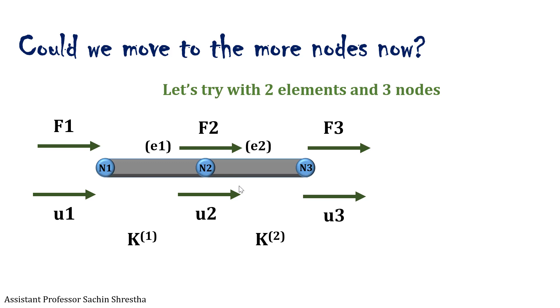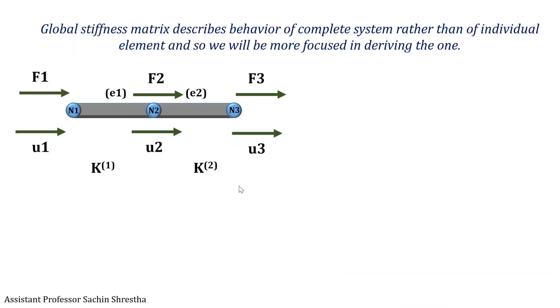The global stiffness matrix basically represents the overall system rather than the individual element. To write the equation, we will use a trick to obtain the equation in a faster manner. For each equation for force at a particular node, for each displacement vector close to the node we will take it as positive, and if away from it, as negative.